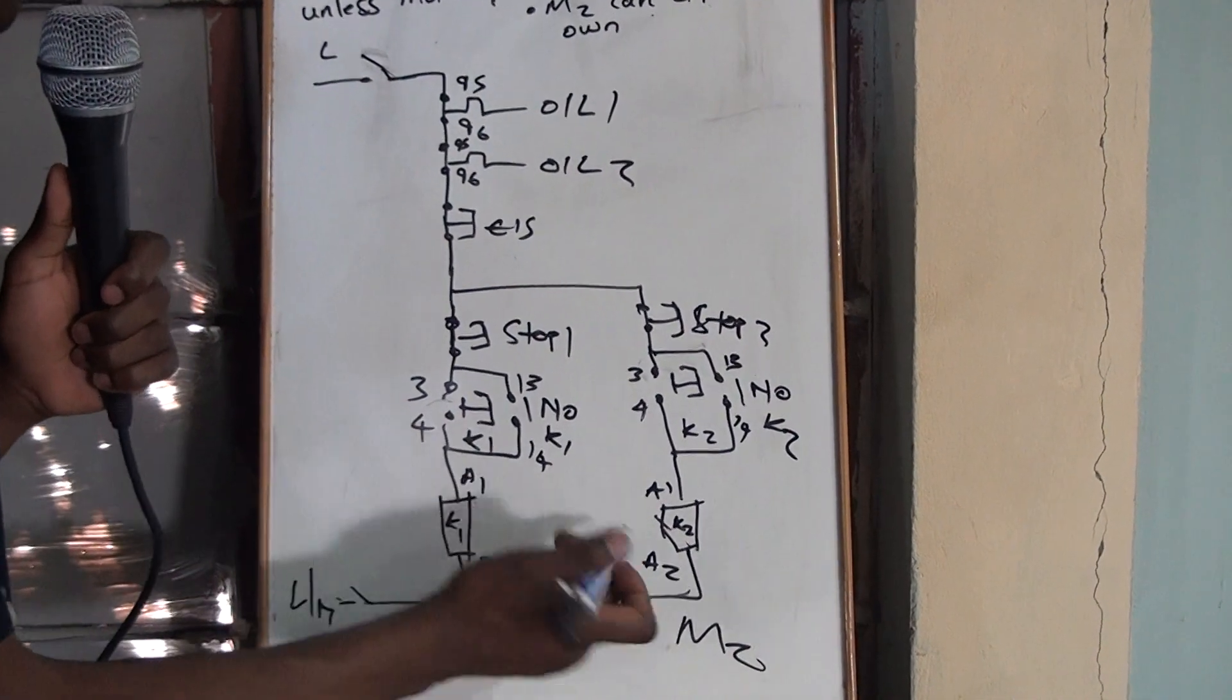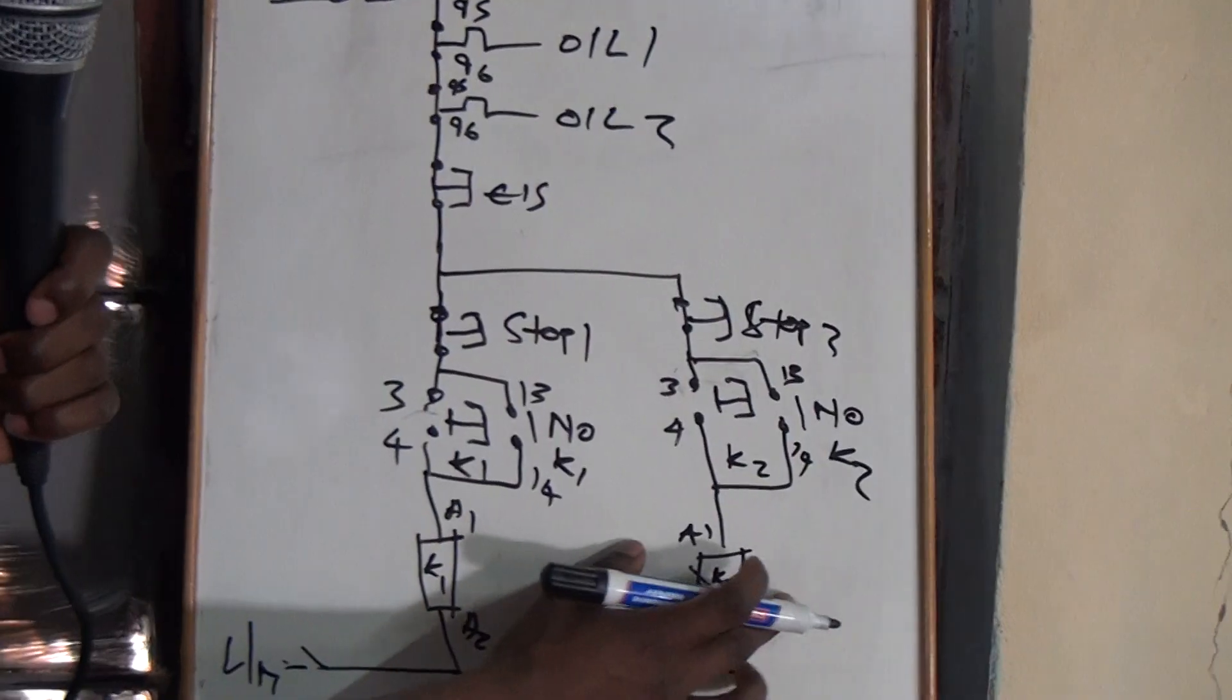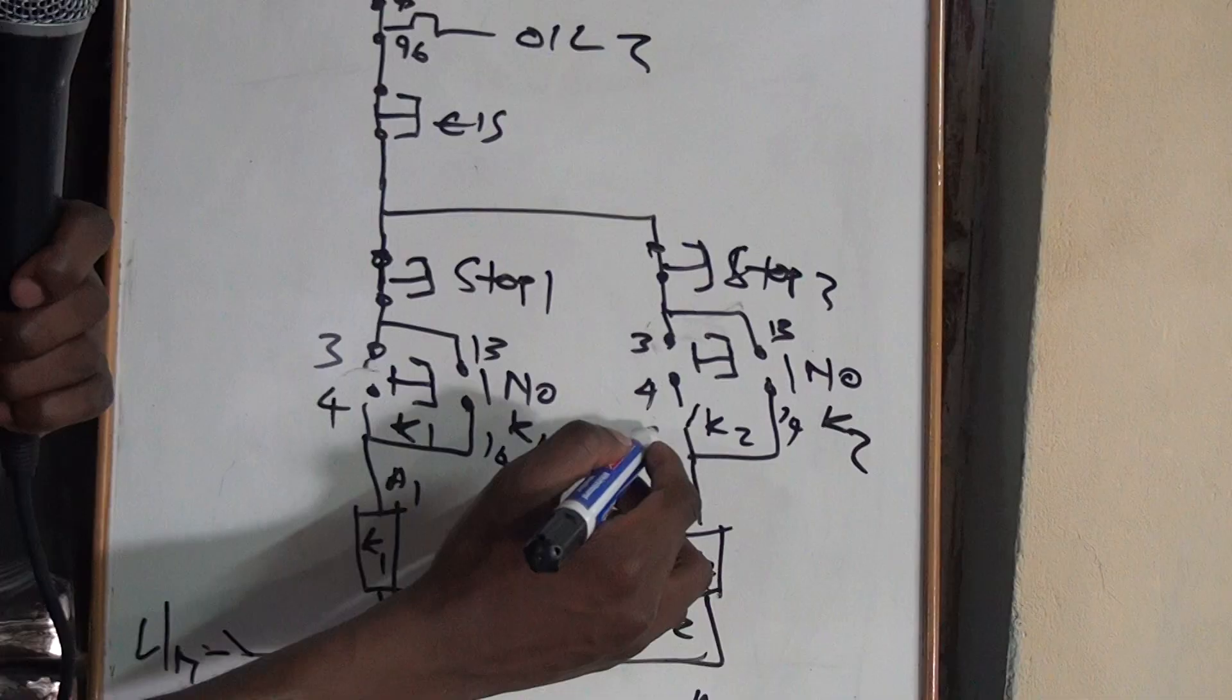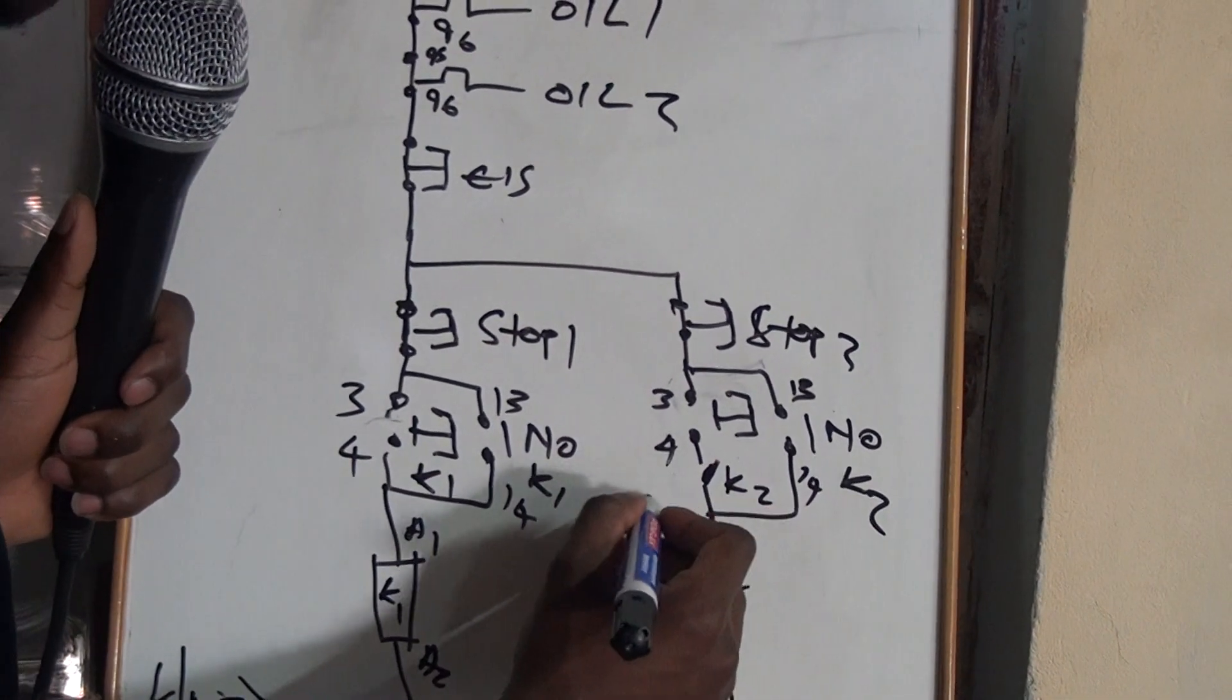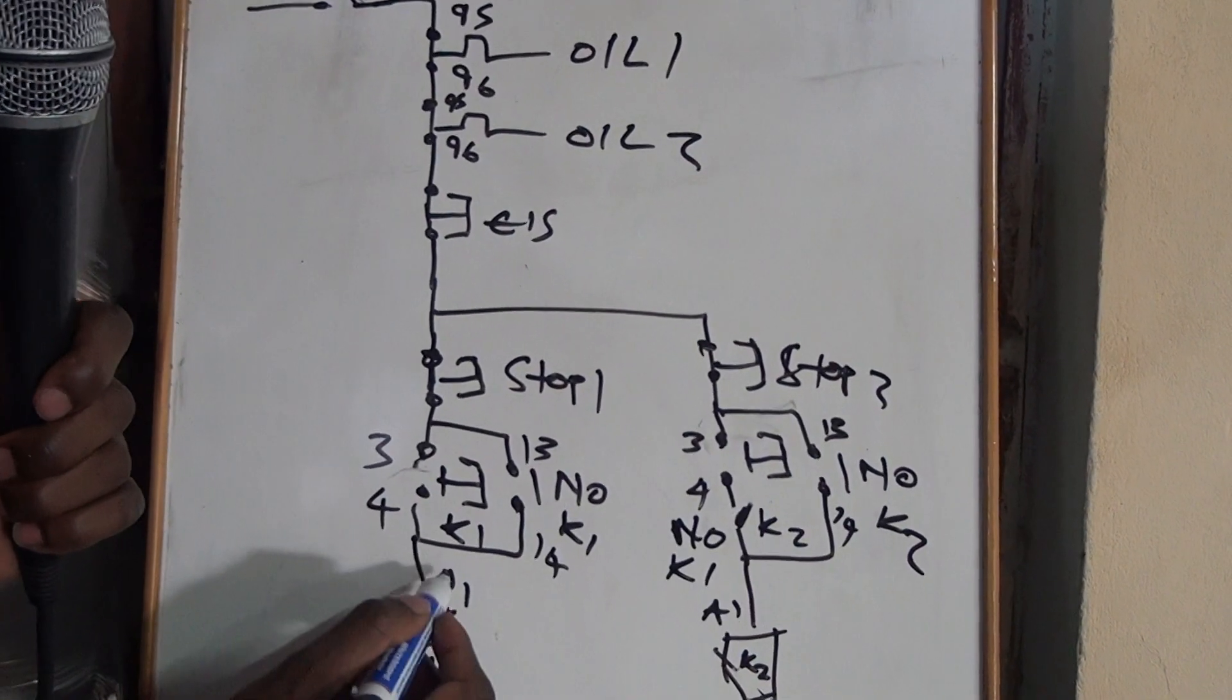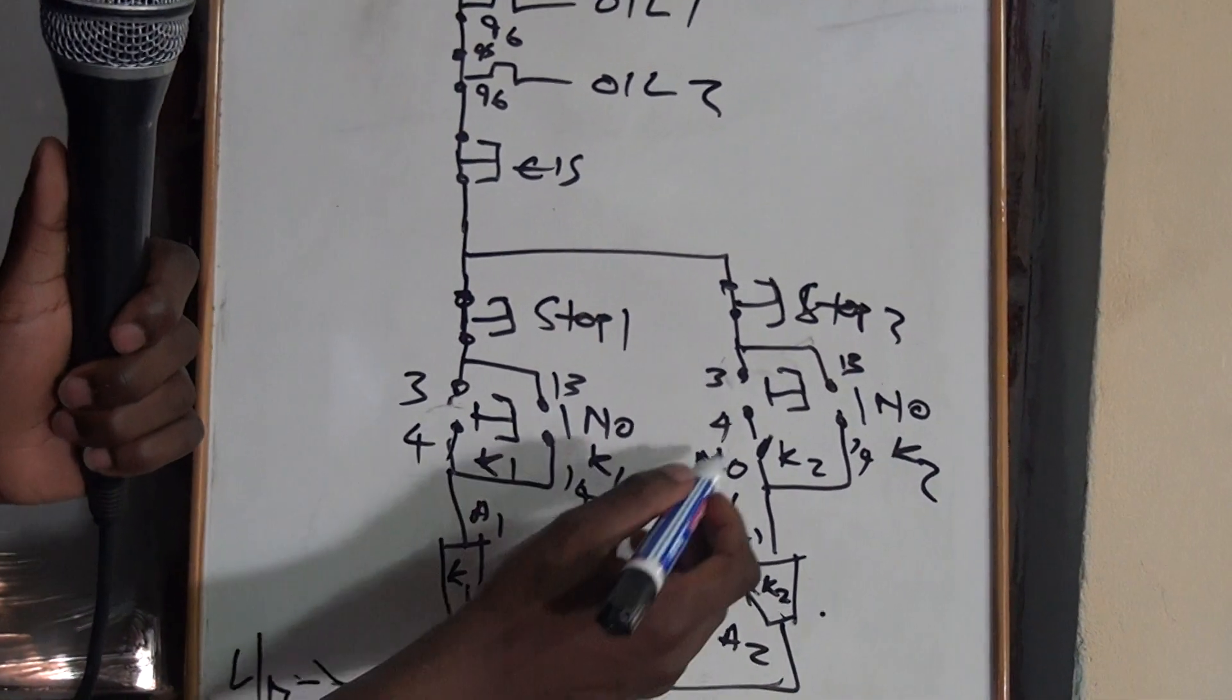But the statement says that you cannot start Motor 2 before starting Motor 1, and Motor 2 must be able to stop on its own independently, so it means that we will still put it here, we are going to put, just like a sequence number 2, we'll introduce a normally open of K1, so that you start this motor after you have started Motor 1.